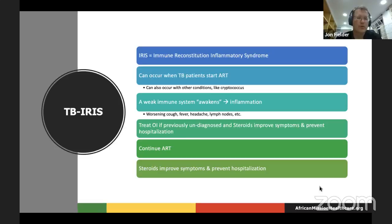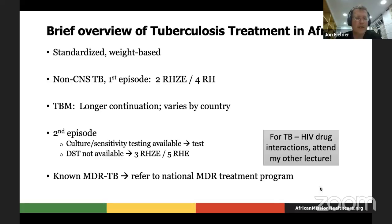The treatment regimens are standardized and weight-based. Generally, patients get two months of rifampicin, isoniazid, pyrazinamide, and ethambutol, followed by four months of rifampicin and isoniazid. Kenya does a total of one year's treatment, extending the rifampicin/isoniazid component. If the GeneXpert shows multidrug-resistant TB, you have to refer to the national program. There are lots of drug interactions between rifampicin and antiretroviral therapy — we often have to change the medicines or increase the dose. Warfarin is another one, and the list could go on: anti-seizure medicines and others. That brings me to the end of my time, and I'll pass it back to Lance.